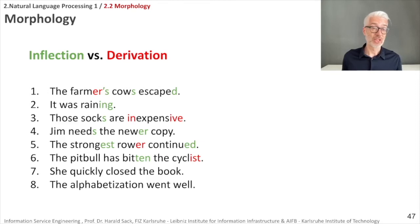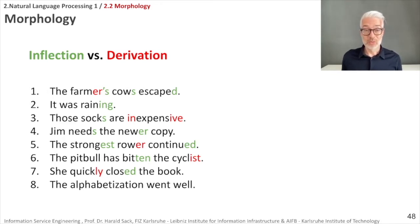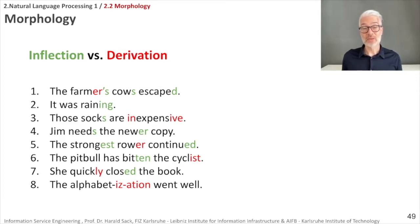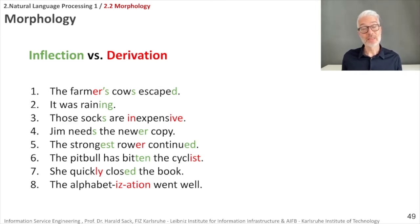'She quickly closed the book': 'quick' → 'quickly' — from adjective to adverb by adding 'ly' — is derivation since the word category changes. 'Close' → 'closed' is past tense inflection. 'The alphabetization went well': 'alphabet' (noun) → 'alphabetize' (verb) → 'alphabetization' (noun) — since the word category changes throughout, this is clearly derivation.